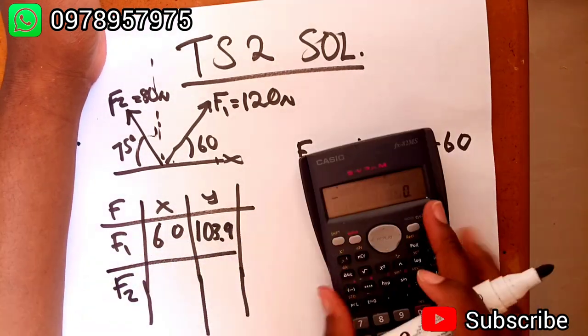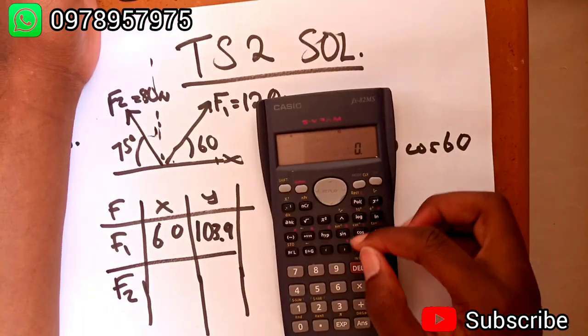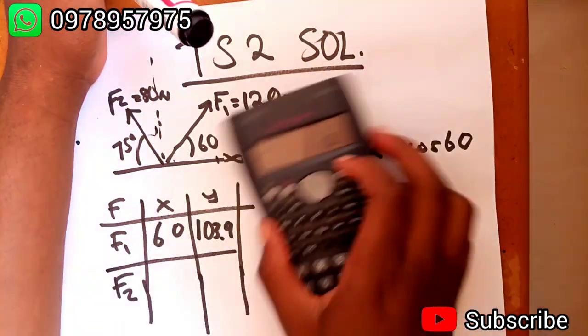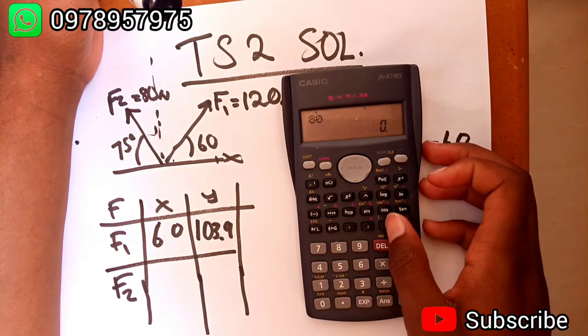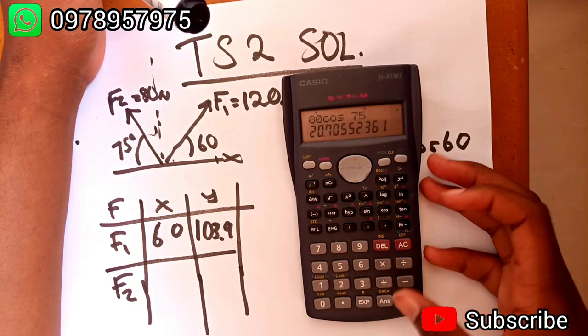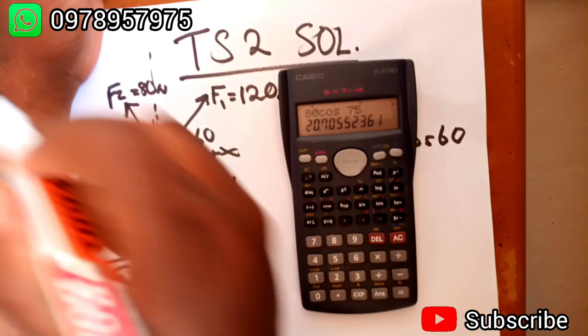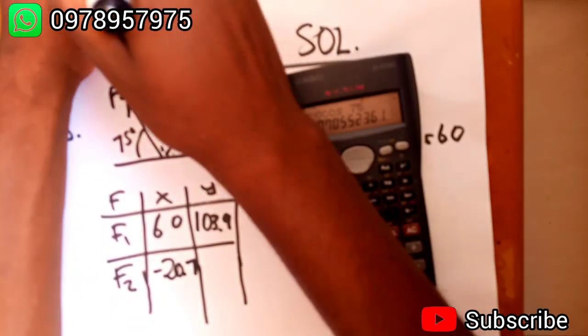F2 is going to give us F2 in the x. F2 in the x is negative, going this direction. F2 in the x is 80 cosine 75, which is going to give us negative 20.7.